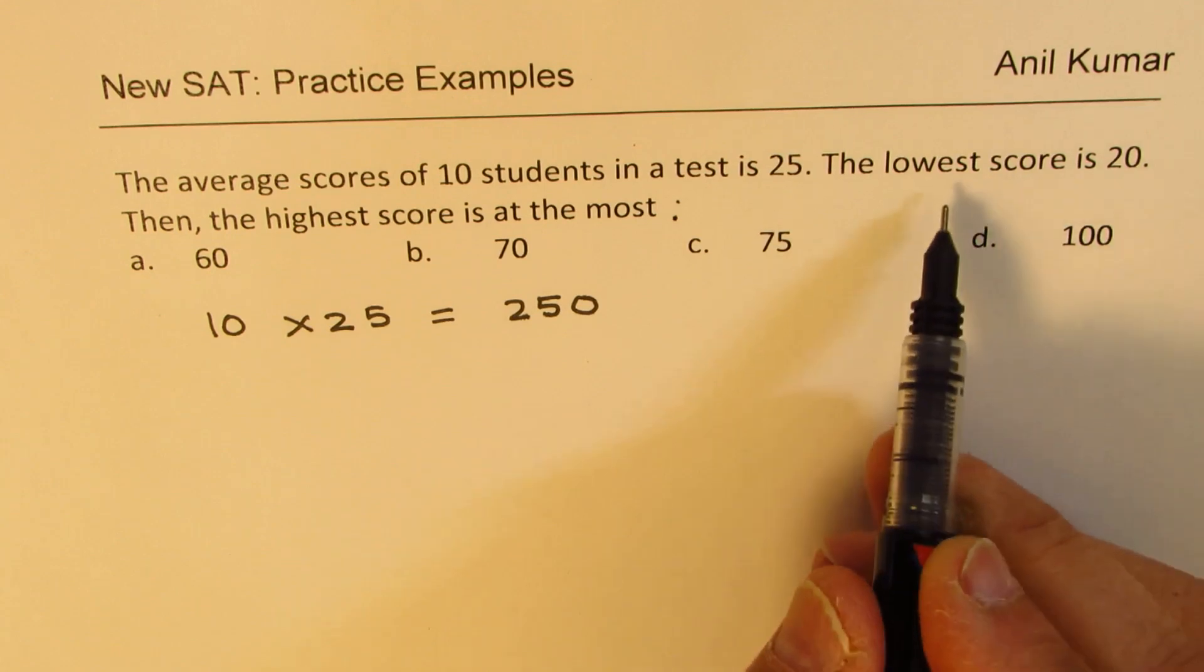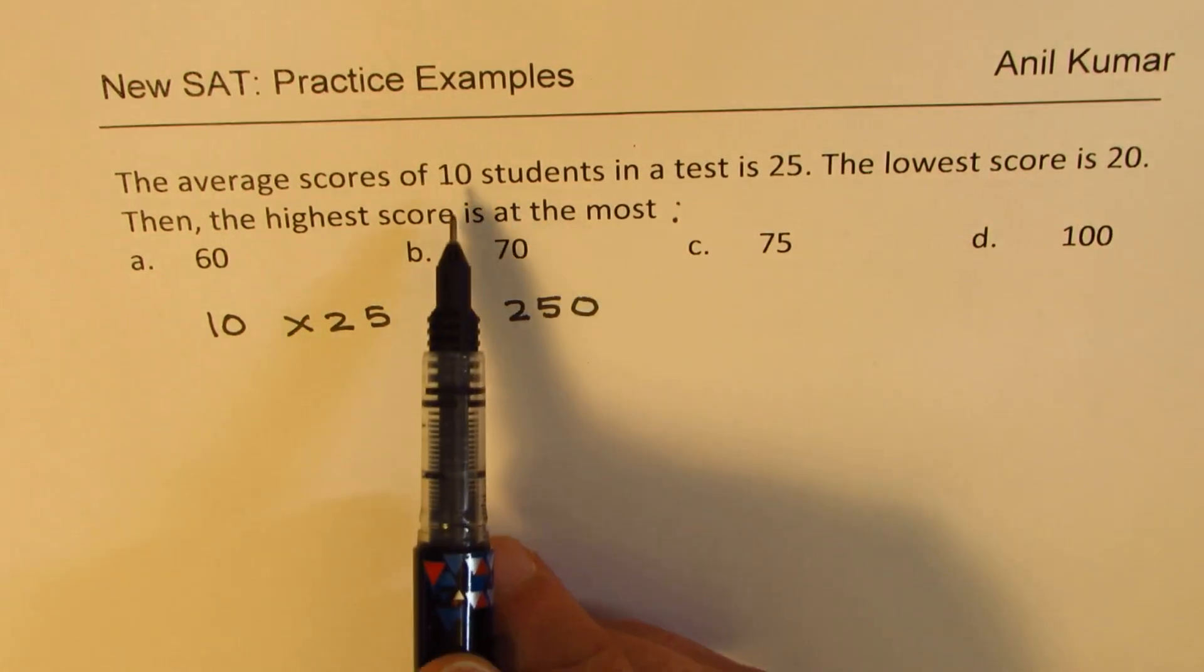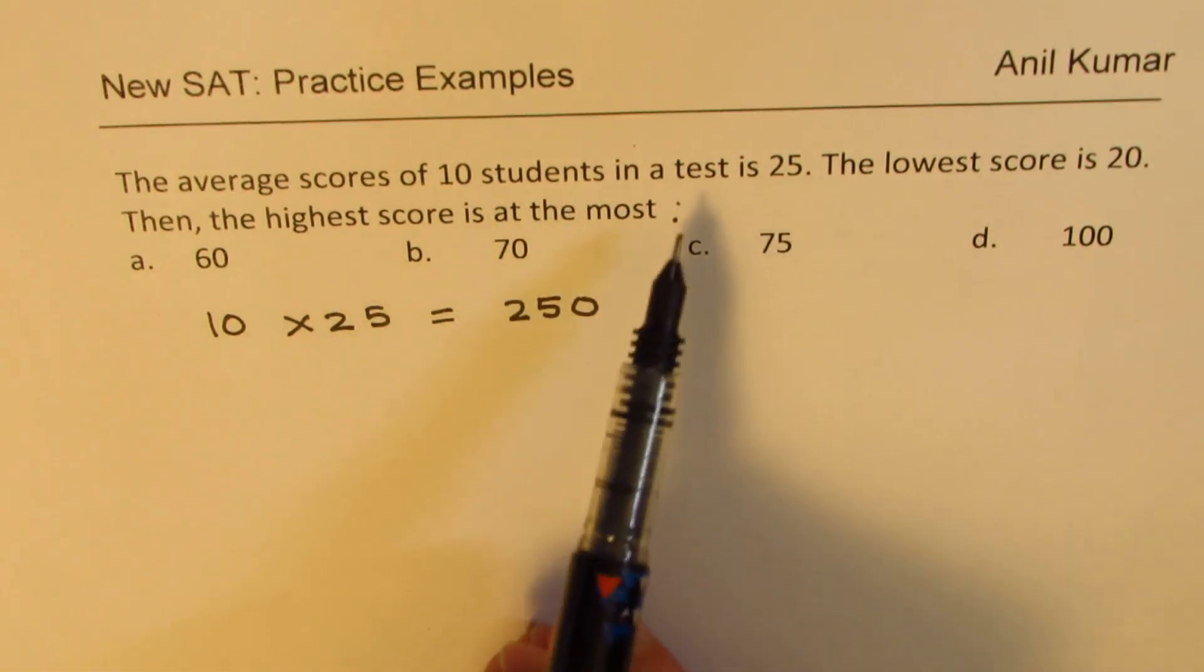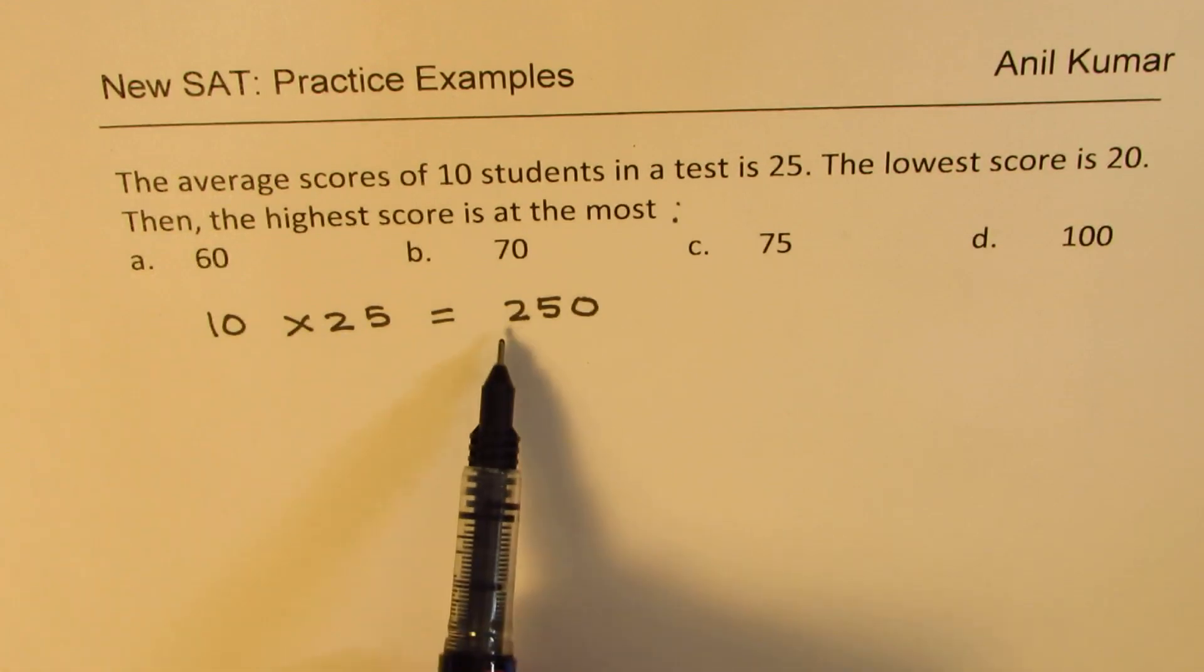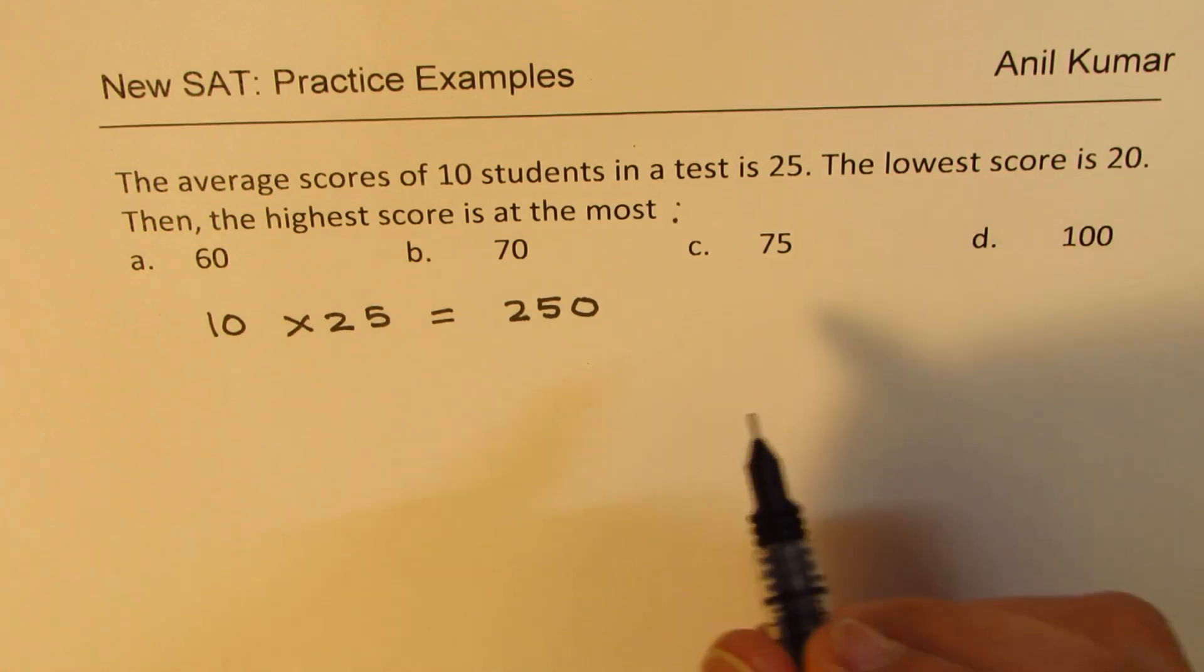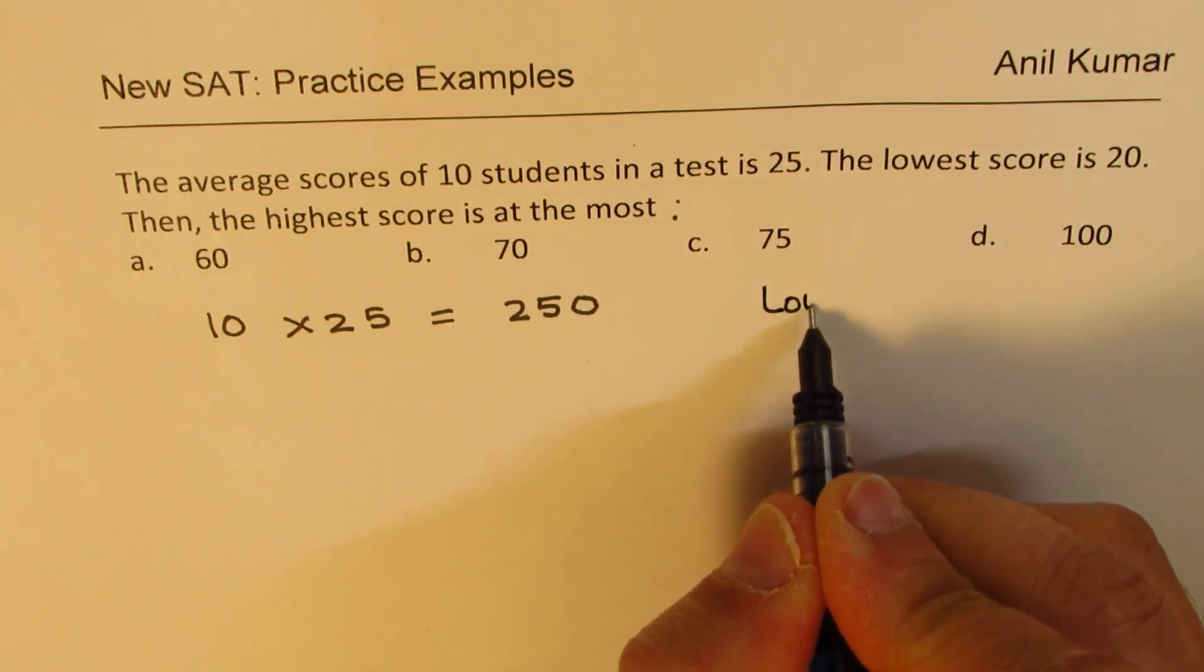So it says the lowest is 20 and there are 10 students. So if the average is 25, then you know the total is 250, which is 25 times 10. Now what does this mean? Lowest is 20.